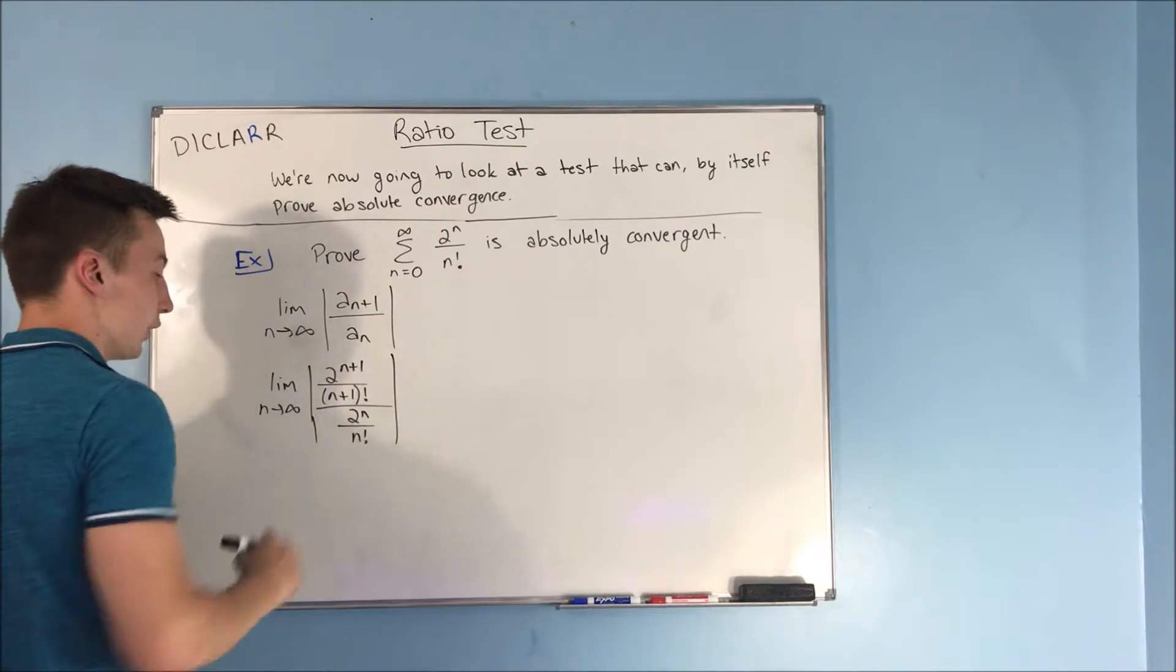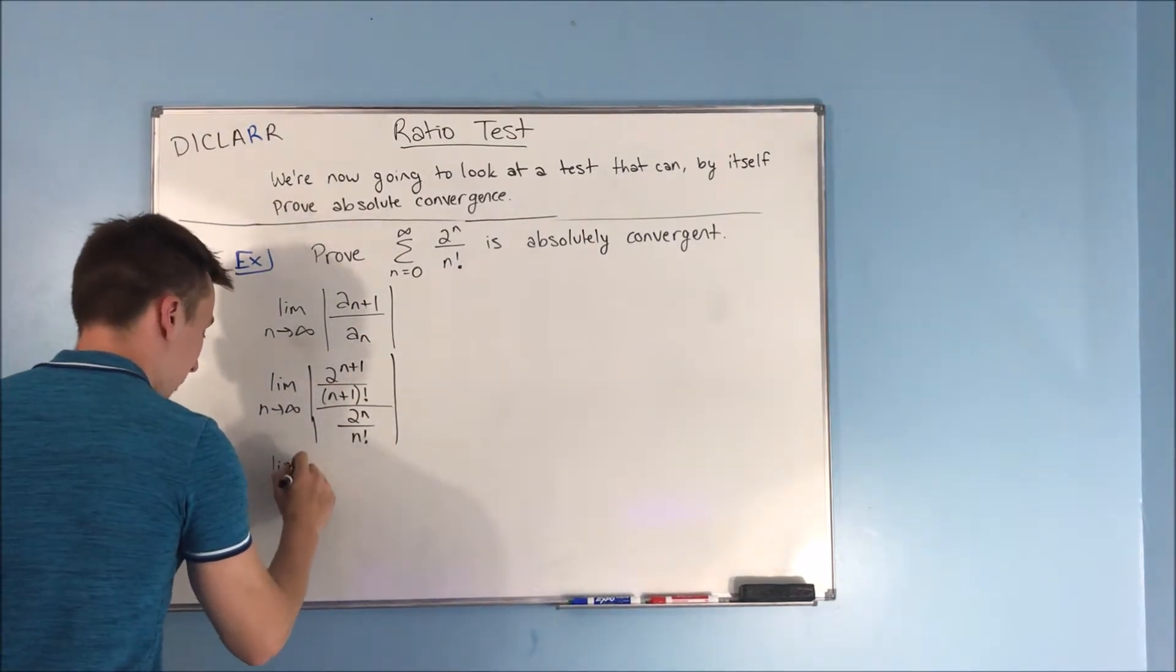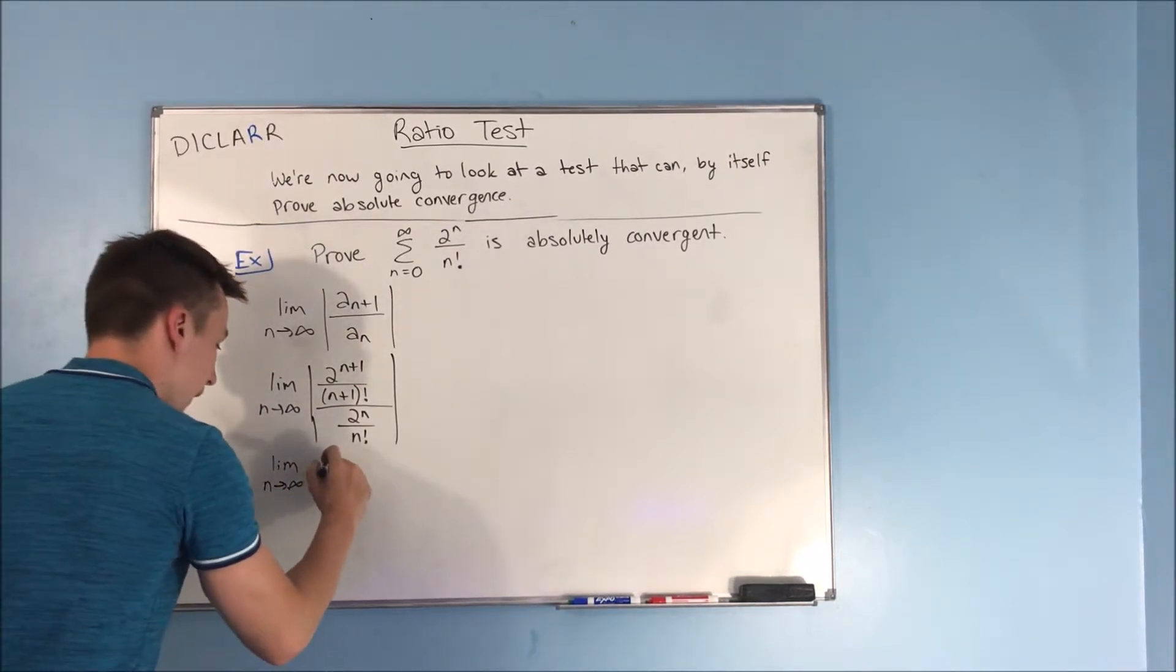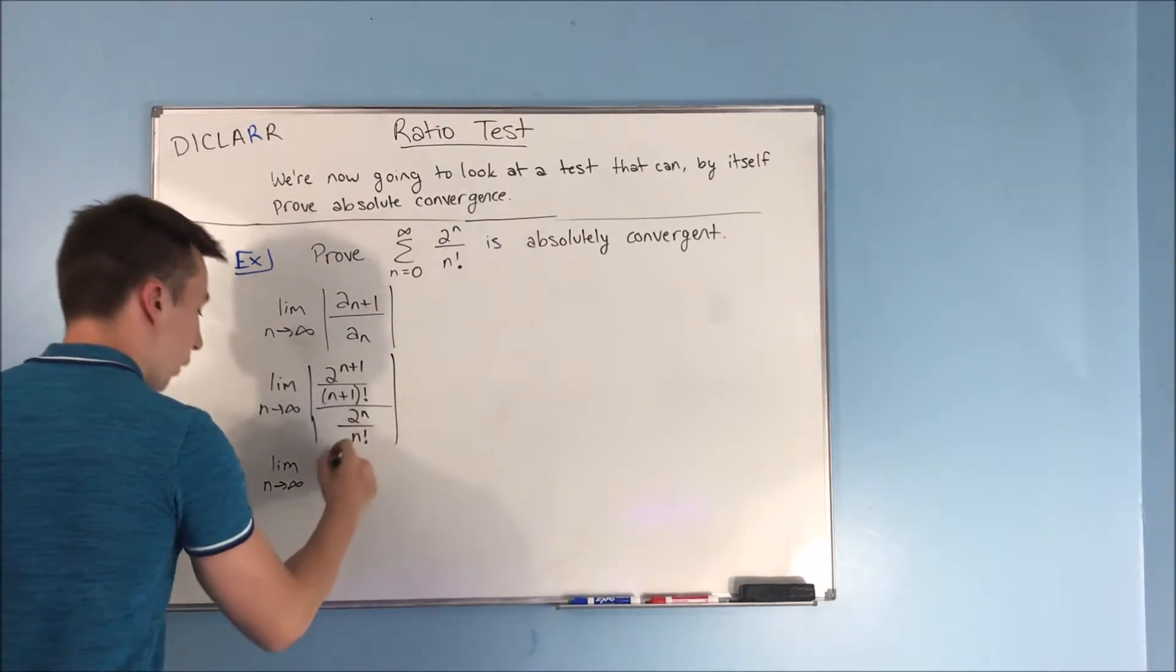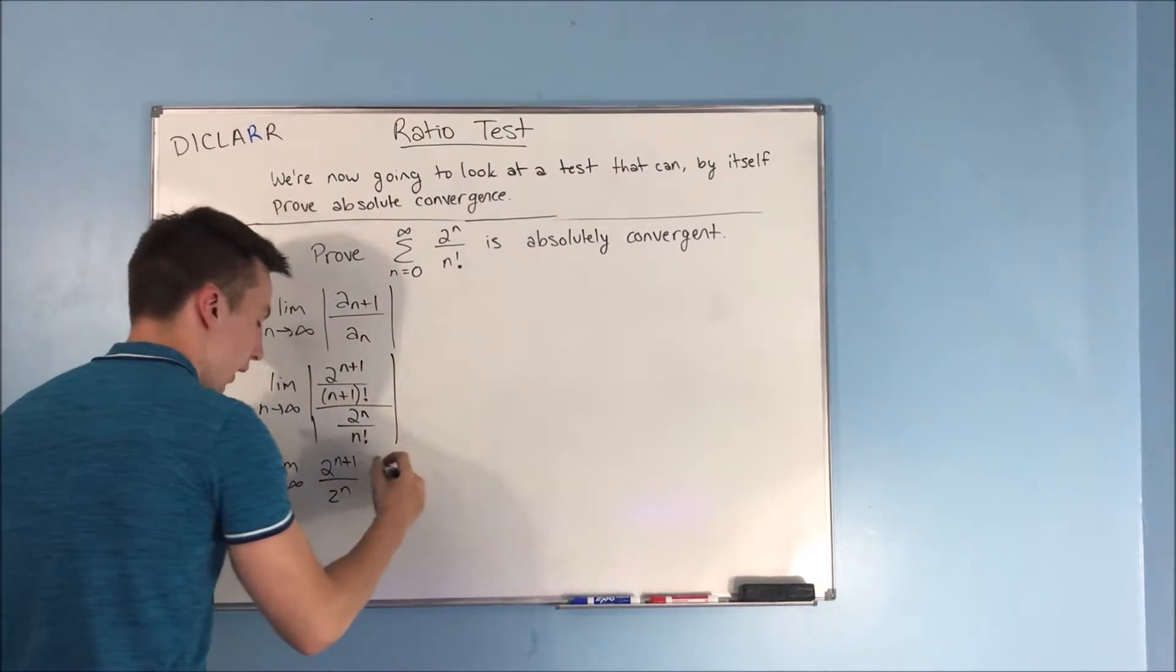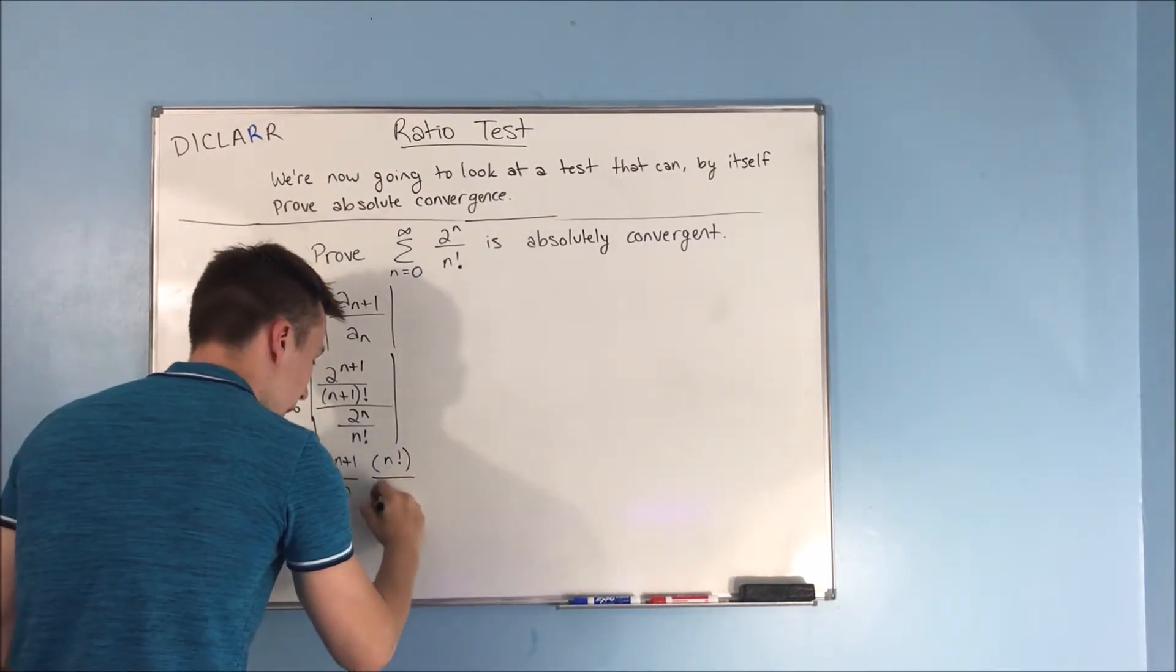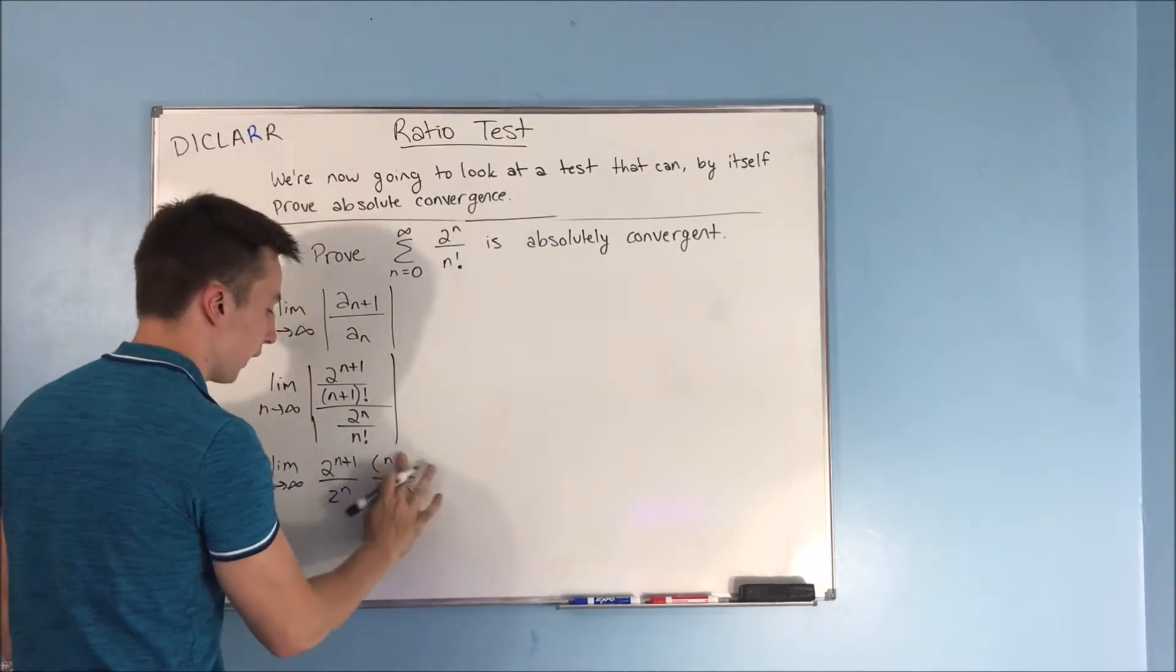We can put everything up so it's not a fraction on top of a fraction here. We have the limit as n approaches infinity of two to the n plus one over two to the n, and I'll kind of separate this here. You're going to have n factorial over n plus one factorial.